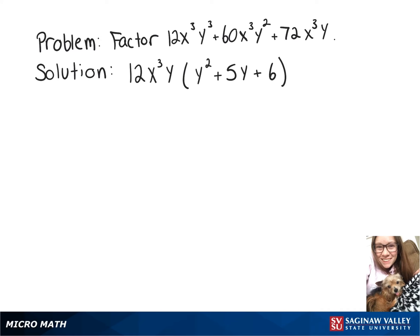And now we can factor what's left in parentheses by thinking of two numbers that multiply to get 6 and add to get 5. So using the numbers 3 and 2, we can rewrite what's in the parentheses as (y + 3)(y + 2).